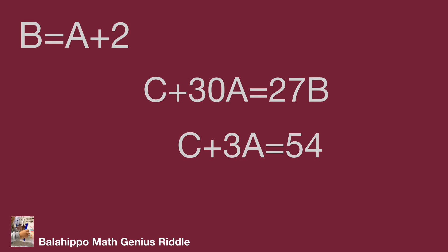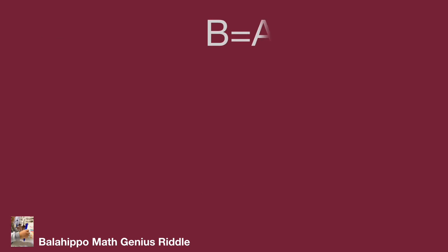While b equals a plus 2, substituting b by a plus 2 into the equation gives c plus 30a equals 27a plus 54, which simplifies to c plus 3a equals 54. But c and a are single digits, and the maximum value of c plus 3a is 9 plus 27 equals 36, which cannot meet this equation. So, b equal to a plus 2 is not the right condition. The only valid condition is b equal to a plus 1.